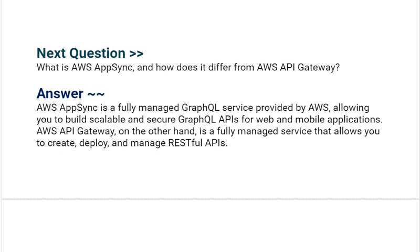Our next interview question is: what is AWS AppSync and how does it differ from AWS API Gateway? AWS AppSync is a fully managed GraphQL service provided by AWS, allowing you to build scalable and secure GraphQL APIs for web and mobile applications. AWS API Gateway, on the other hand, is a fully managed service that allows you to create, deploy, and manage RESTful APIs.